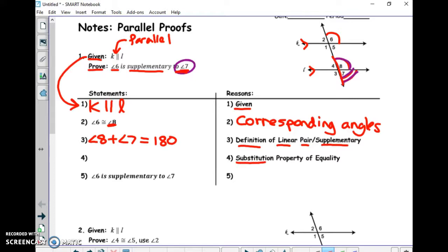That's what I'm going to do for step four. I'm going to replace angle eight with angle six because I know they are congruent. They're corresponding. Let's replace eight with six. All I did was replace angle eight with angle six by substitution. That's angle six plus angle seven equals 180.